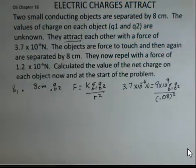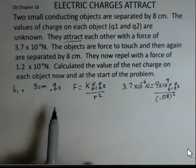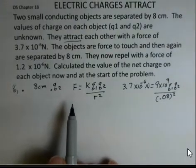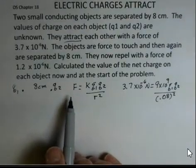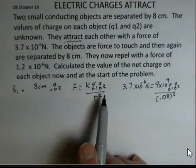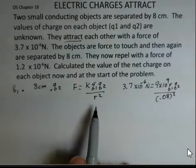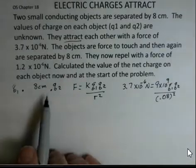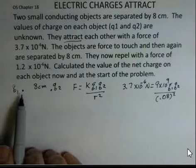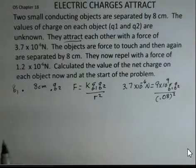The force is 3.7 times 10 to the minus 6 Newtons. This is an example of Coulomb's force law. So the general law, force equals K Q1 Q2 over r squared. R is the distance from center to center of the two objects. We won't worry about the physical sizes of these objects, just say they're very small conducting objects.